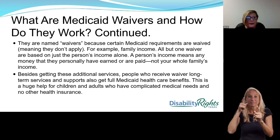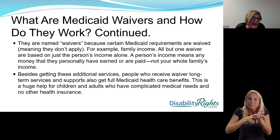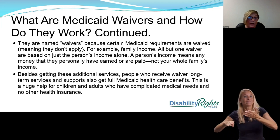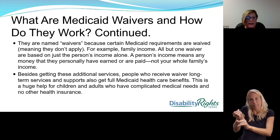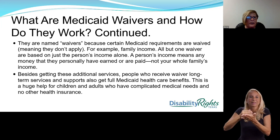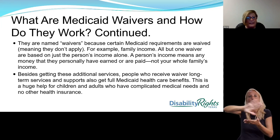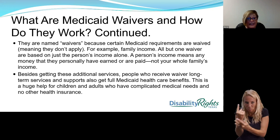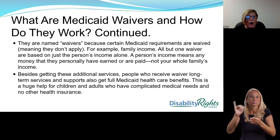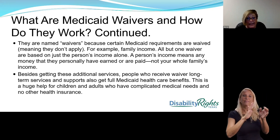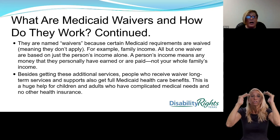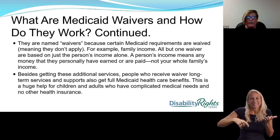They're named waivers because certain Medicaid requirements are waived, meaning they don't apply. For example, family income. All but one waiver are based on just the person's income alone — any money that they personally have earned or are paid, not the whole family's income. Besides getting these additional services, people who receive waiver long-term services and supports also get access to full Medicaid health care benefits. This is a huge help for children and adults who have complicated medical needs and no other form of health insurance.